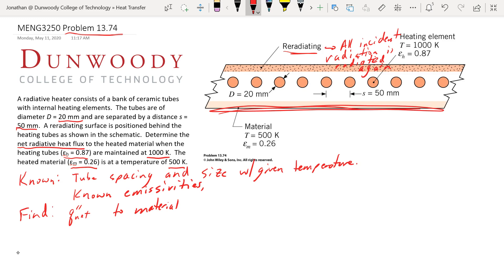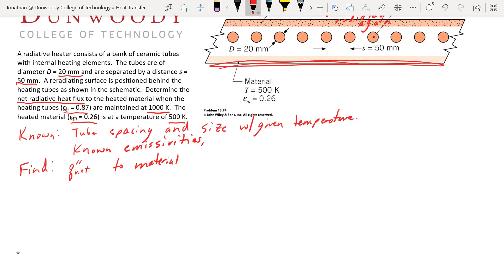So for a schematic, it's basically what we've got up there. I'll draw a separate one here just for one little section. I'll just simplify it down to two tubes, got a re-radiating surface back here, some material down here. They're 50 millimeters apart and the tube diameter is 20 millimeters.